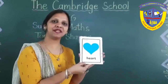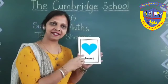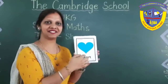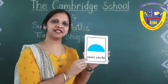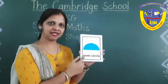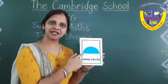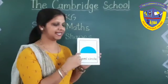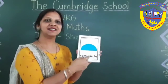Next shape is heart. Heart has any corners? No, heart has no corners. Next shape is semi-circle. Semi-circle — a half part of a circle. It has one side.